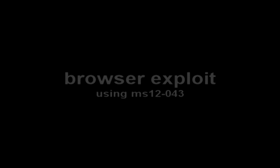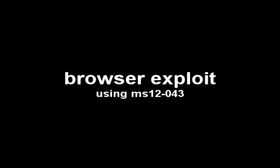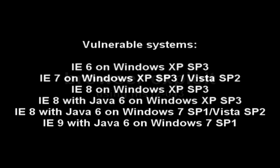Good evening, Hackology, and welcome to another episode. In tonight's episode, we're going to be looking at browser exploit MS12-043, which is an XML exploit for Windows Internet Explorer. This was released in 2012. All systems affected are Windows XP through to Windows 7, and from IE6 to IE9, so this exploit affects quite a lot of systems.